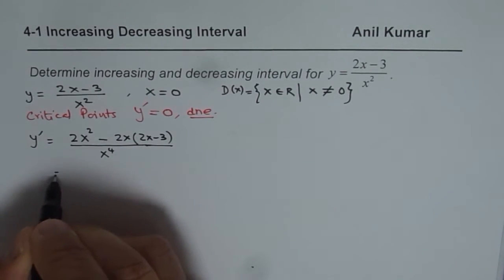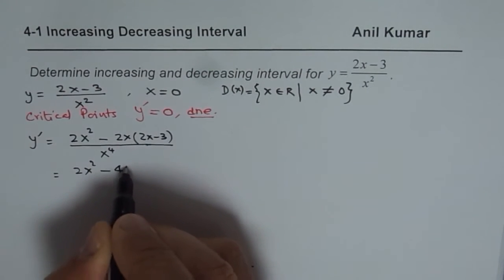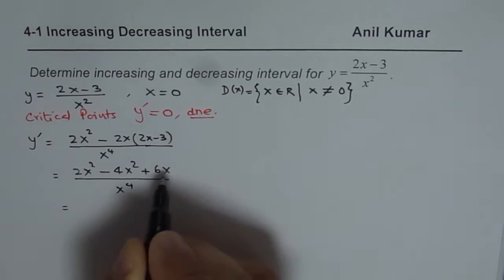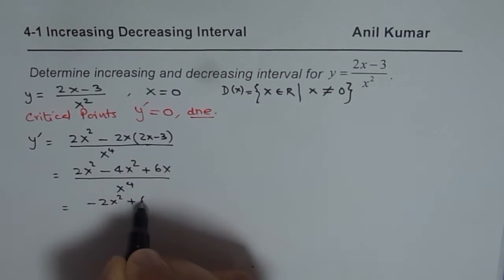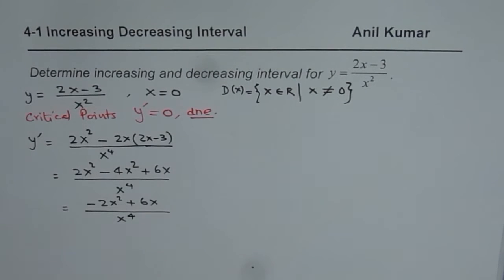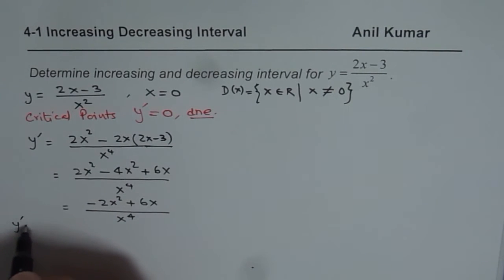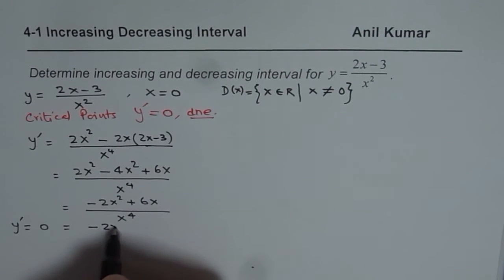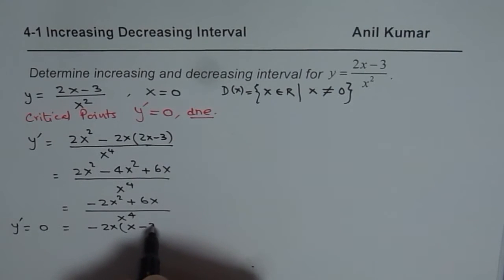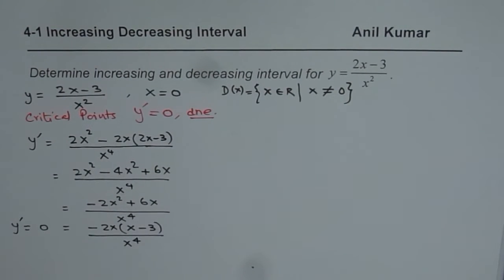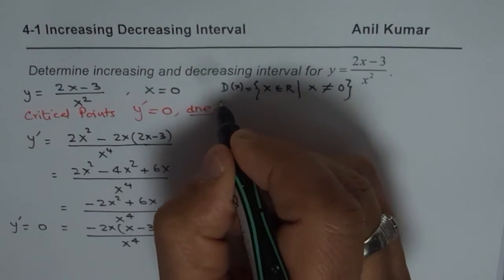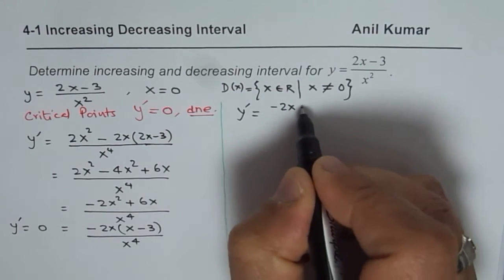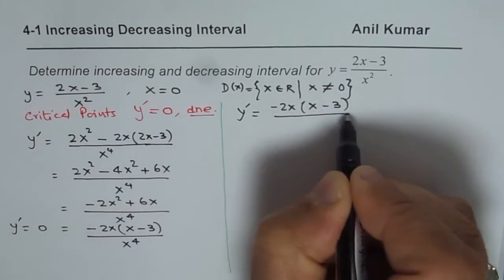Simplifying further, we get 2x squared minus 4x squared plus 6x over x to the power of 4, which gives minus 2x squared plus 6x over x to the power of 4. Factoring out 2x from the numerator, the derivative becomes y prime equals minus 2x times (x minus 3) over x to the power of 4.